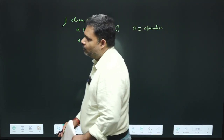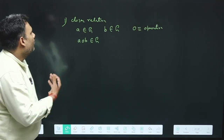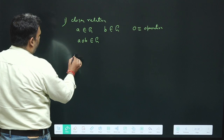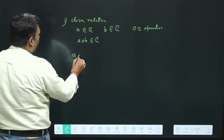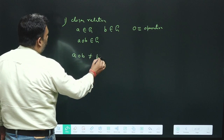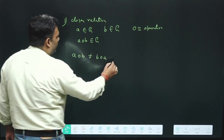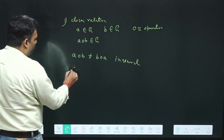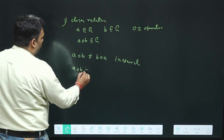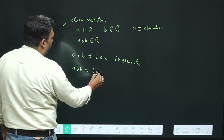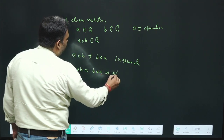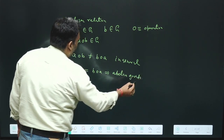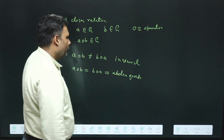So the first requirement is that you must follow the closure relation. It is also very important to note that in general, A operation B is not equal to B operation A. However, when A operation B is equal to B operation A, it is known as an Abelian group. This is a special characteristic of the Abelian group.